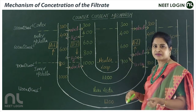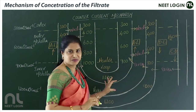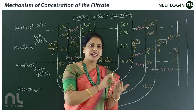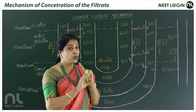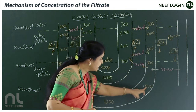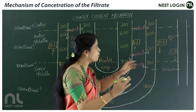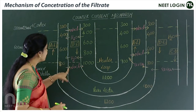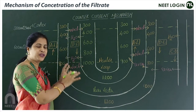Now observing the vasa recta: in the descending limb of the vasa recta, moving from outer medulla to inner medulla, concentration increases because ions are moving in and water is leaving. In the ascending limb of the vasa recta, moving from inner medulla to outer medulla, water enters more and ions leave, so concentration decreases.